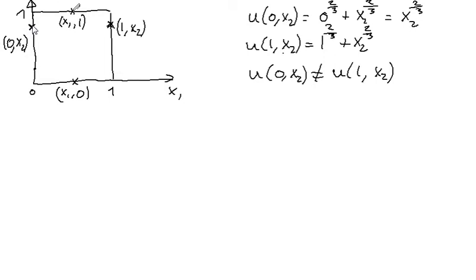Let us start with this point. This point is (0,x₂), and this point is (1,x₂), because the length here is 1. So the first coordinate is 1 here. We have some general point, and we are going to check whether the function is equal in these two points.